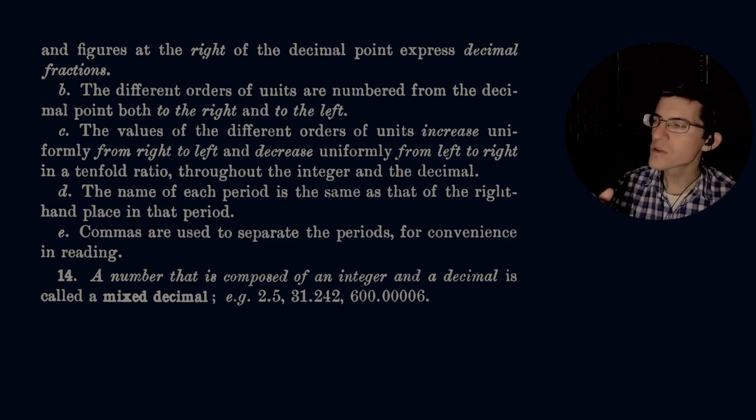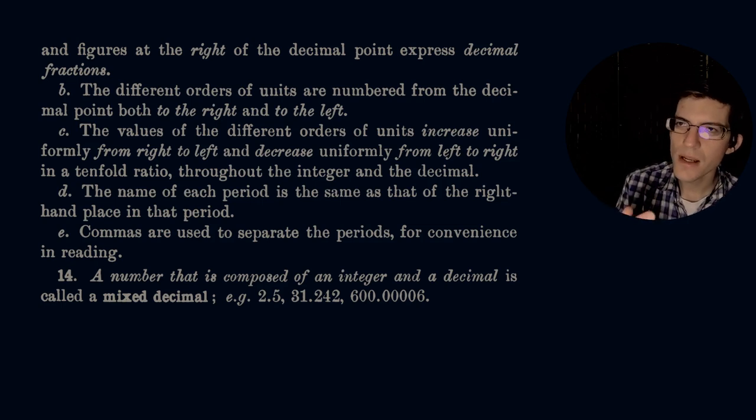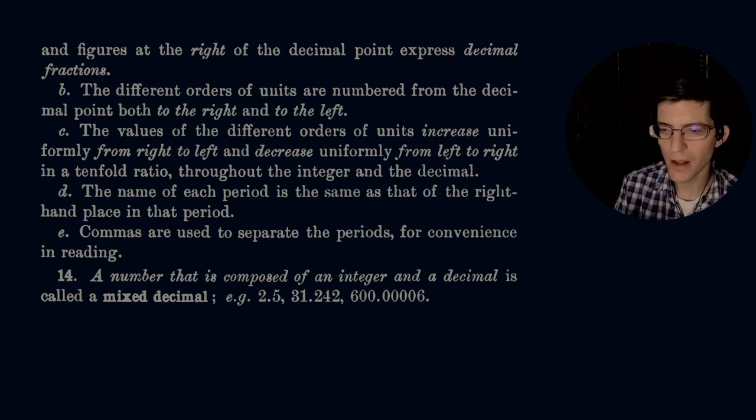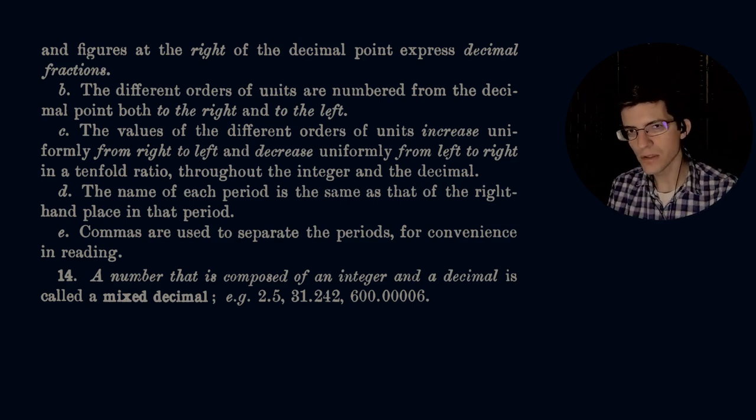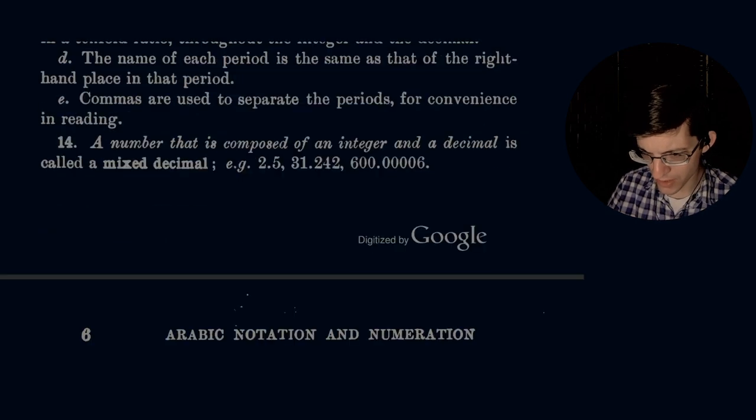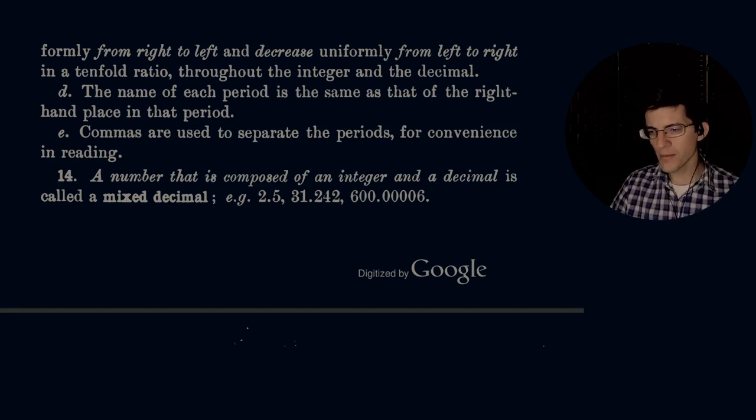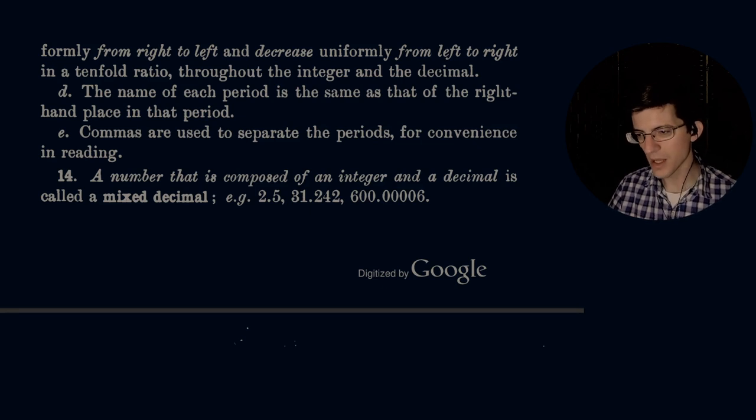Number fourteen: a number that is composed of an integer and a decimal is called a mixed decimal, e.g. 2.5, 31.242, 600.00006. Notice I'm not saying 31.242, when you're reading these off, and in fact, it's probably going to say it here pretty soon.